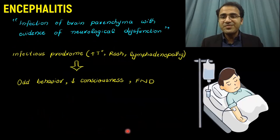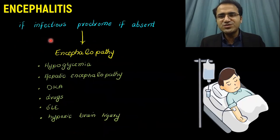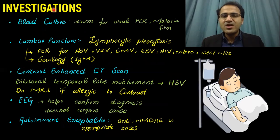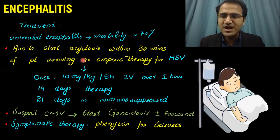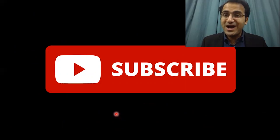In summary, Encephalitis usually precedes an infectious prodrome. Symptoms include bizarre encephalopathic behavior, decreased GCS, and coma. If infectious prodrome is absent, suspect Encephalopathy. Viral causes and non-viral causes — HSV being the common one; TB and malaria can also be treated if suspected. Blood culture, lumbar puncture, and contrast enhanced CT scan will show bilateral temporal involvement in HSV. Treatment includes Acyclovir for HSV; if TB, go for RIPE therapy; if malaria, treat for malaria; and if you suspect CMV, start Ganciclovir.